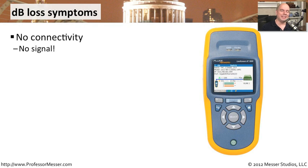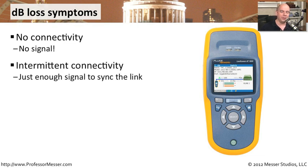If you have a lot of attenuation — a lot of signal loss through a connection — you can see a number of interesting symptoms. Obviously, if you're not getting enough signal from one end to the other, you'll have no connectivity whatsoever: no link lights, no traffic, the connection simply won't come up. A more challenging symptom to troubleshoot is intermittent connectivity, where you're right on the edge and the link goes away at times during the day and works fine at others.